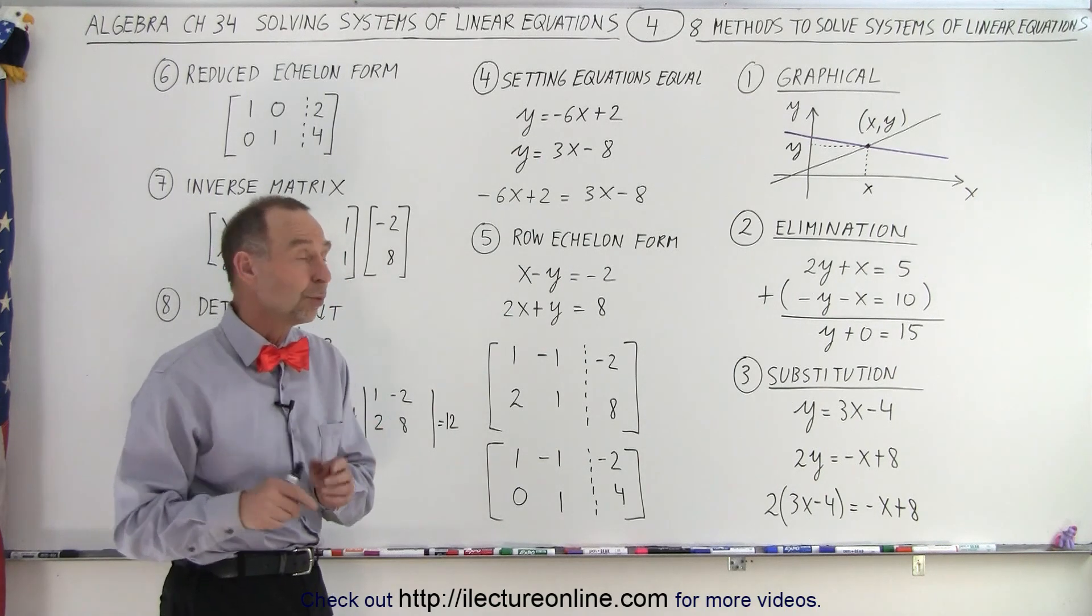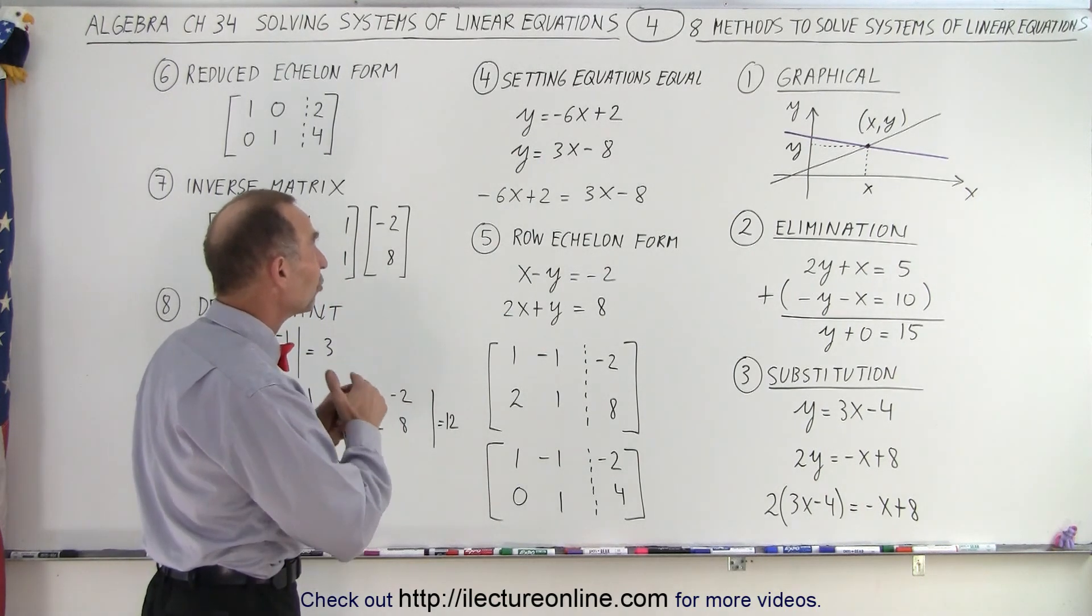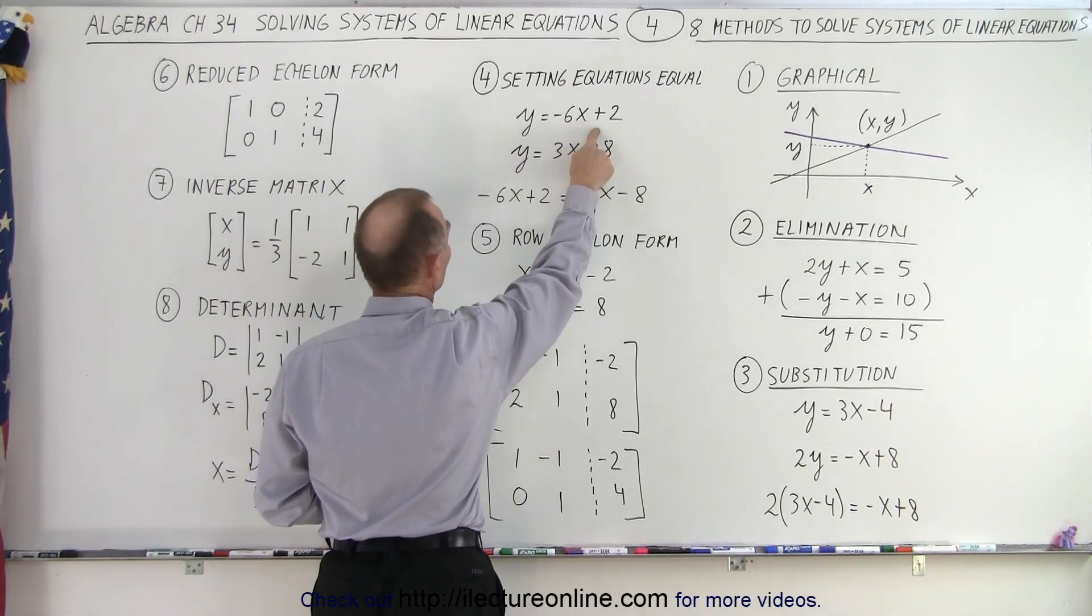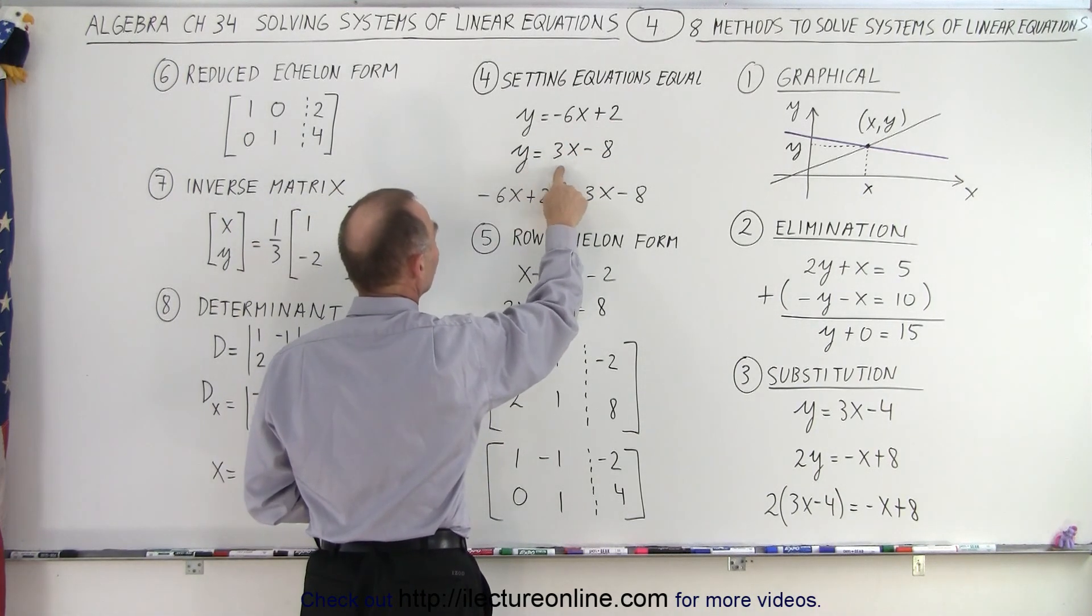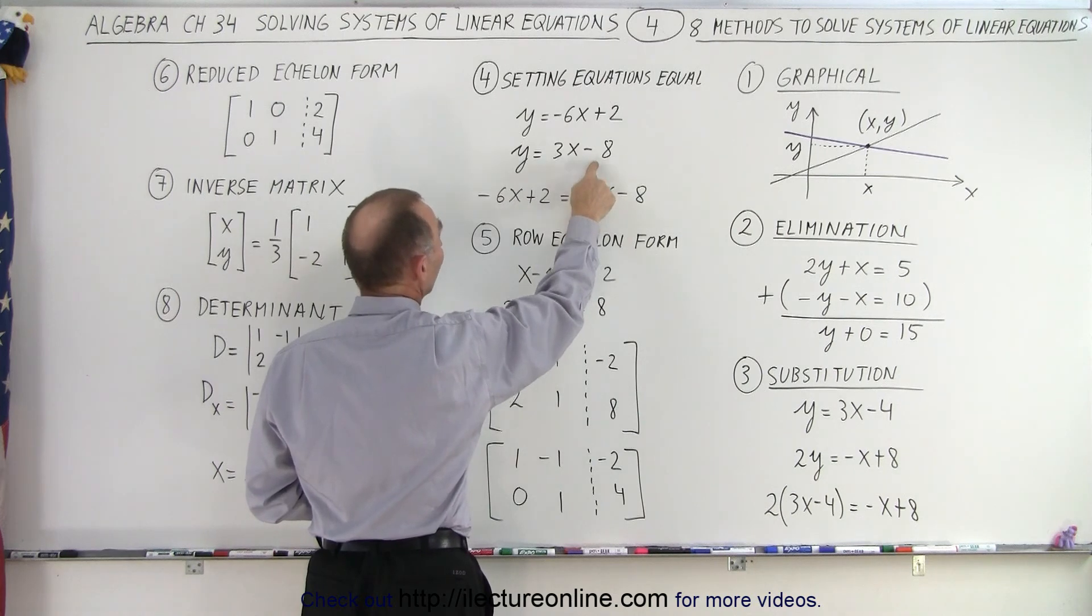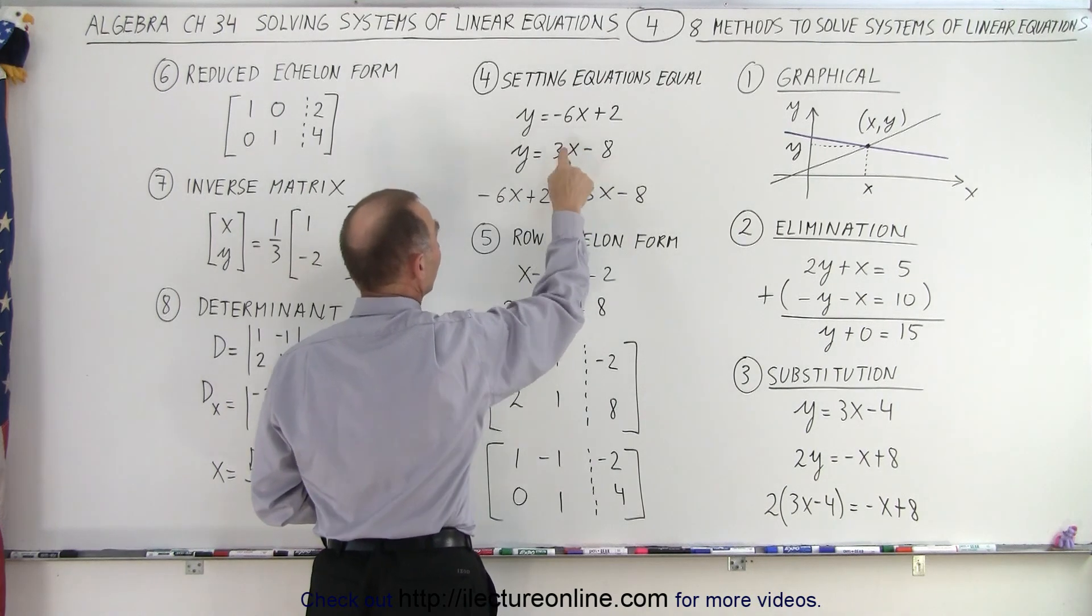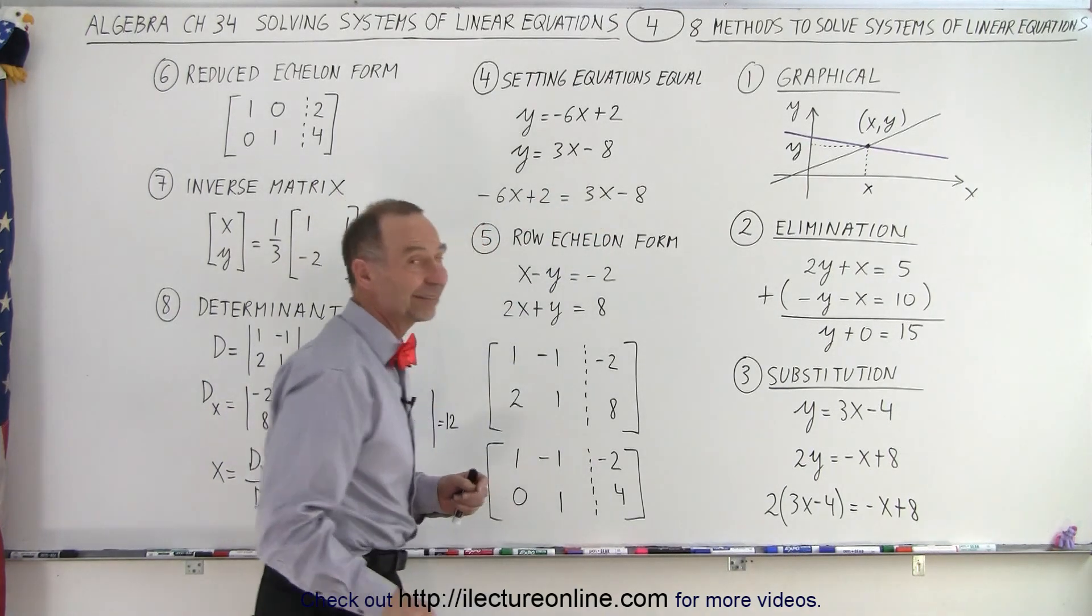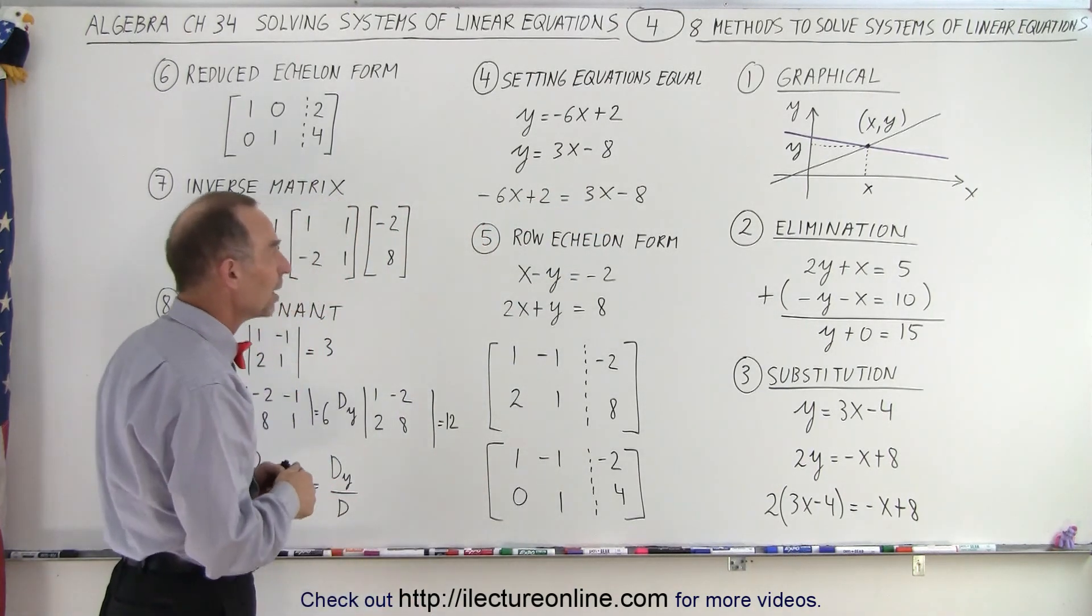Or we can use what we call setting the equations equal. So here we have an equation where y is defined as minus 6x plus 2 and where it's defined as 3x minus 8. Which means that minus 6x plus 2 must therefore equal 3x minus 8. So we set those equal to each other and solve for x and then back to solve for y.